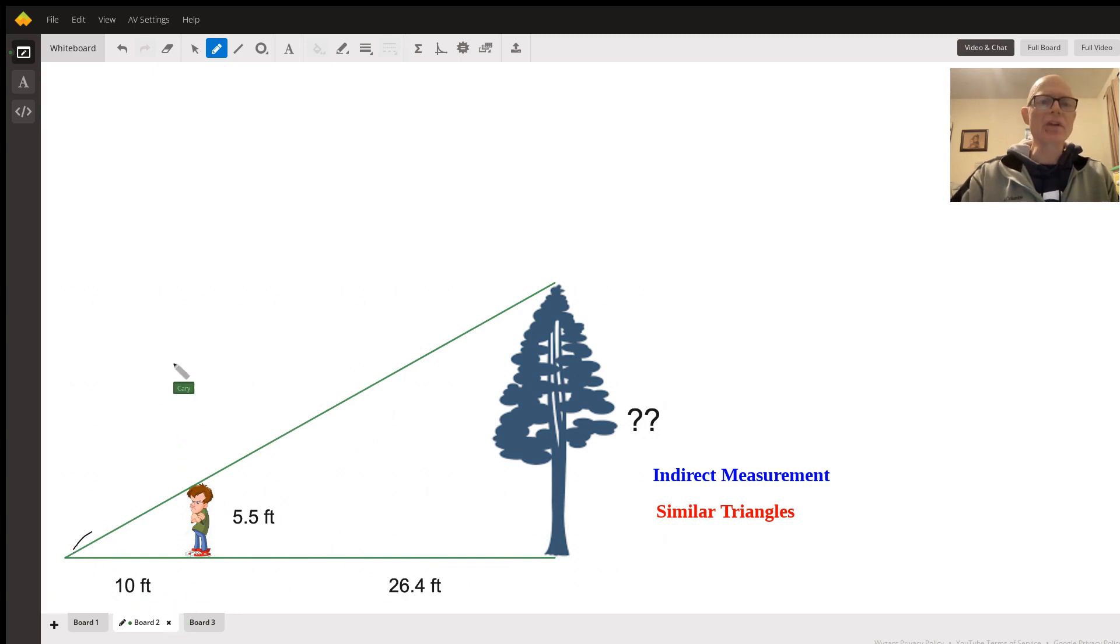But the angle of the sun is the same for both the tree and the young man. So what we end up with is similar triangles, young man making a right angle with the ground, a tree making a right angle with the ground.